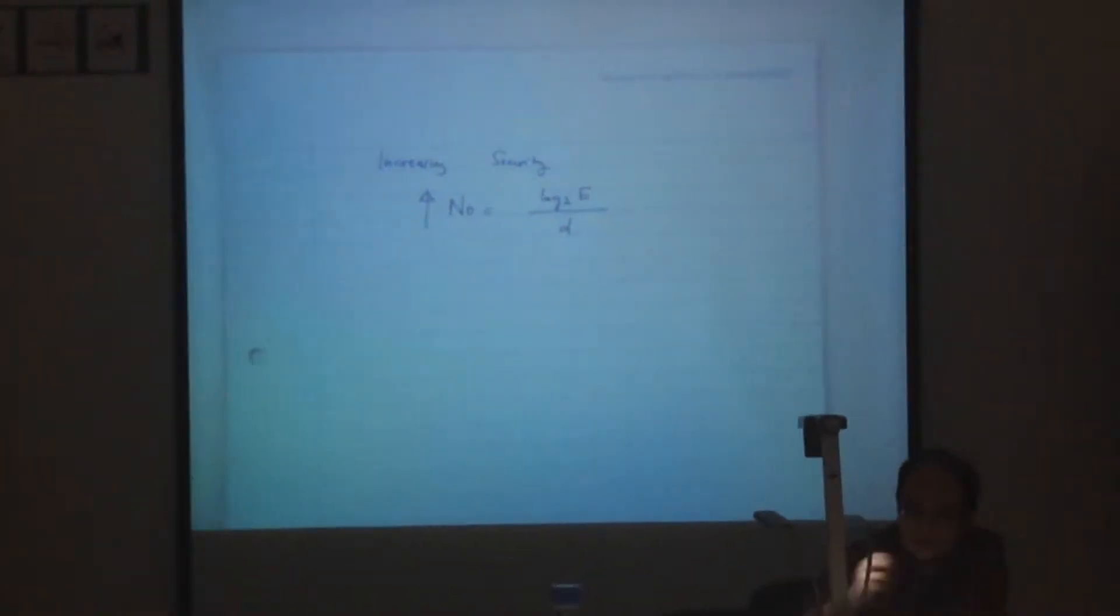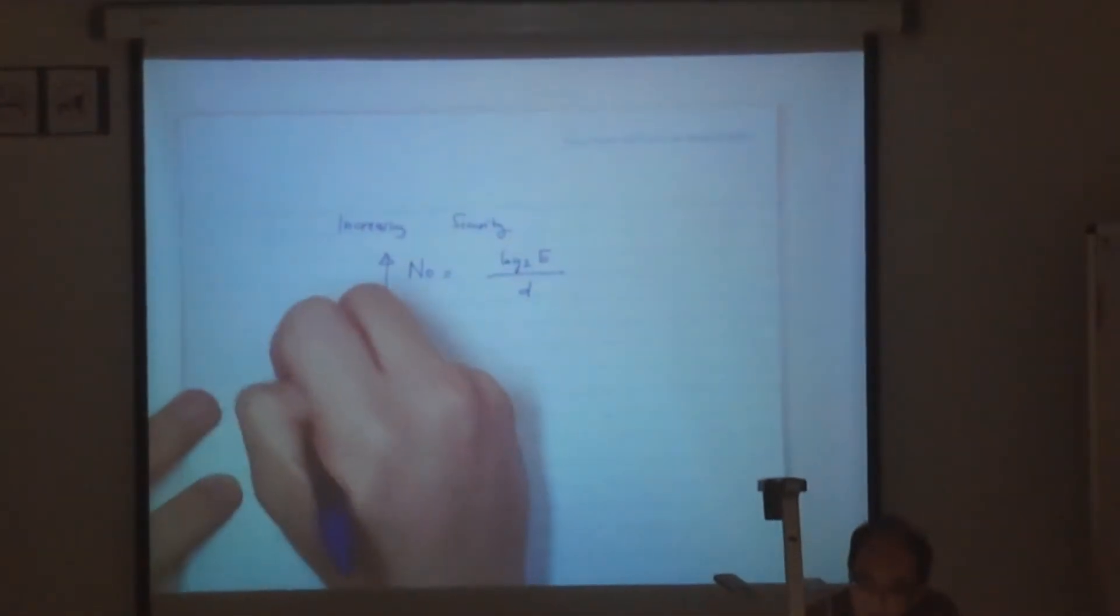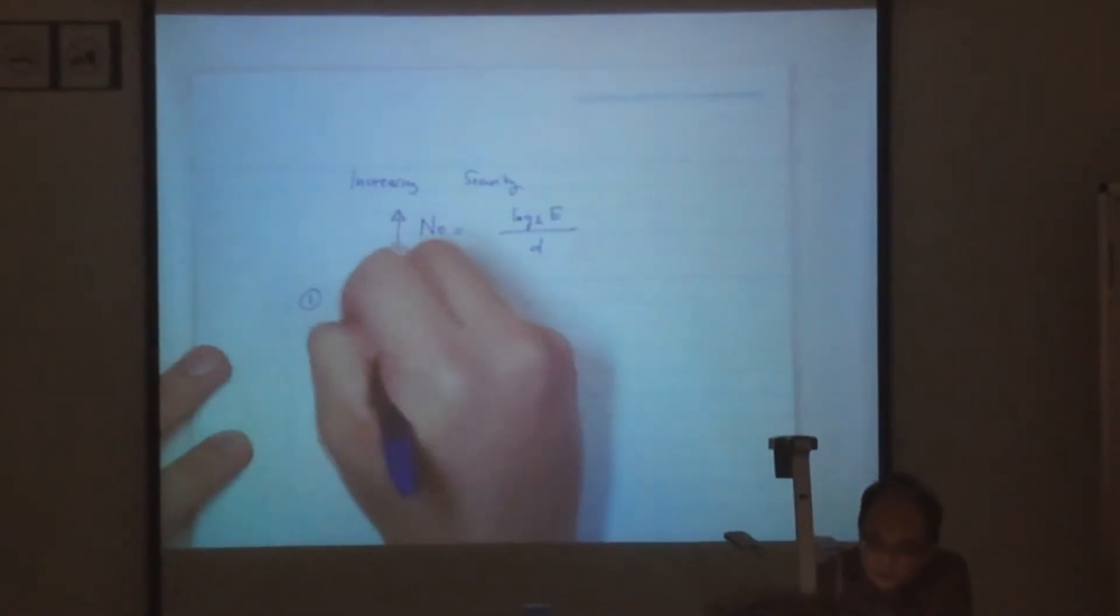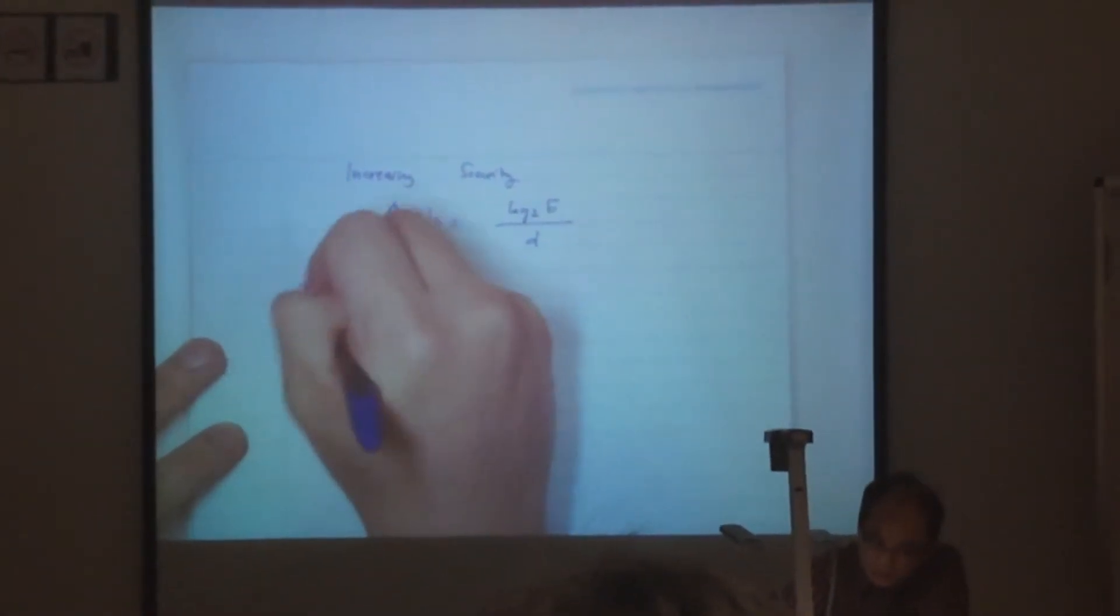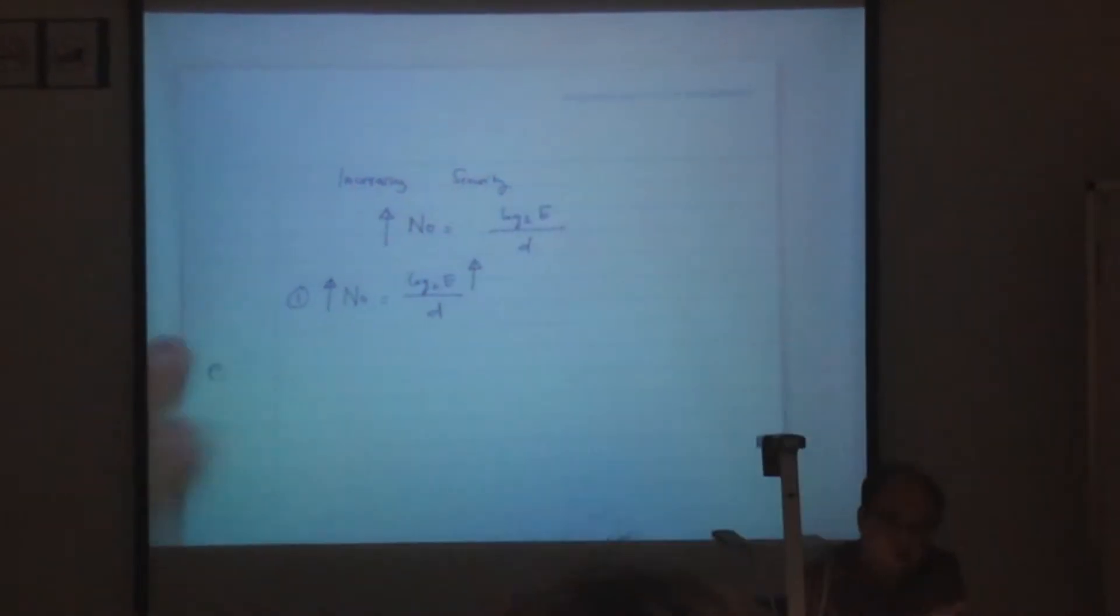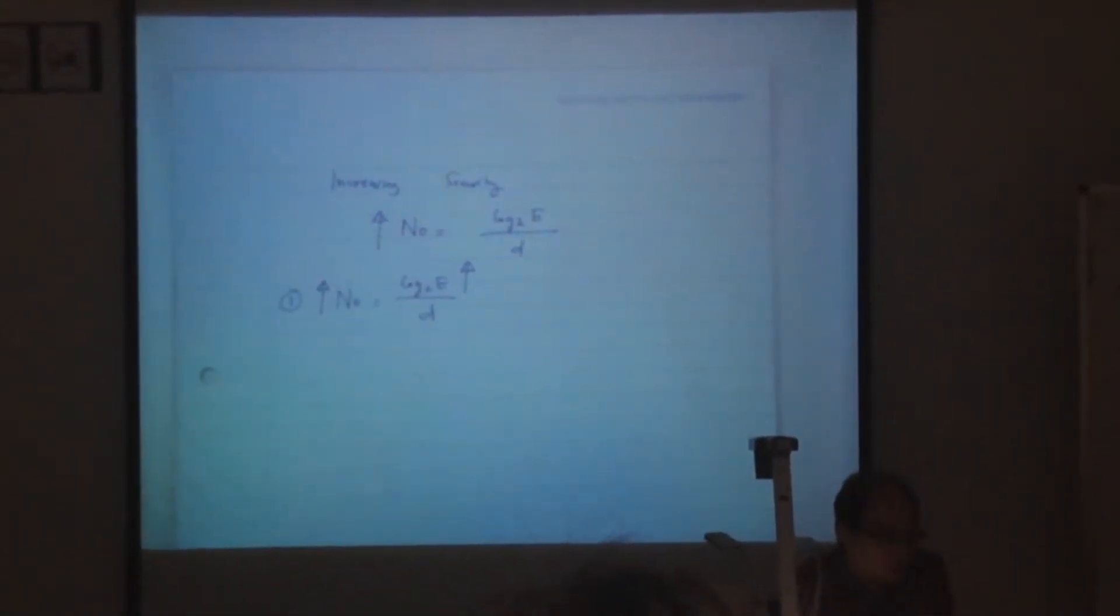In order to increase N0, there are two possibilities. Number one, I want to increase N0, that means I need to increase the key space. So basically, if I can increase the key space, then I can increase N0.